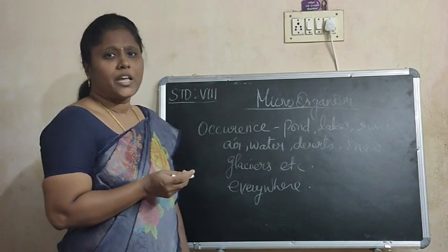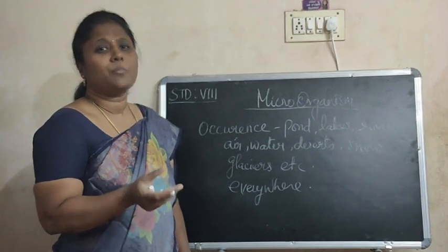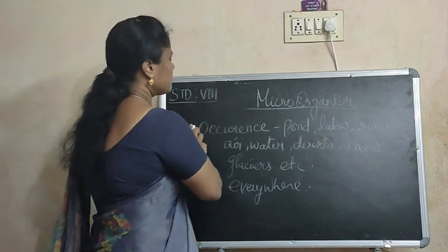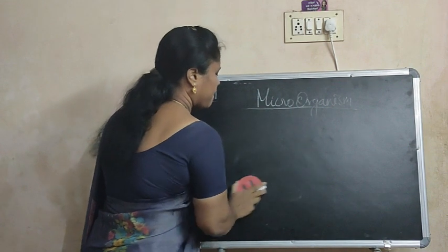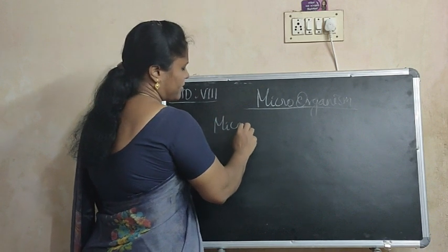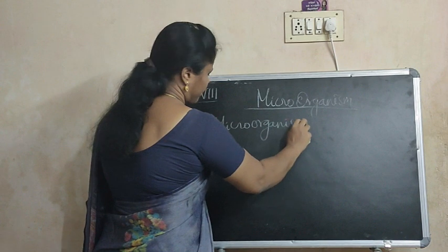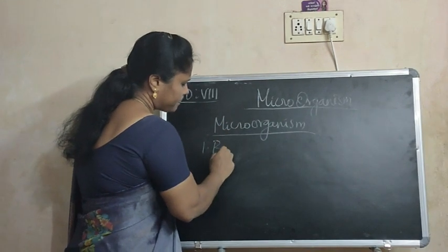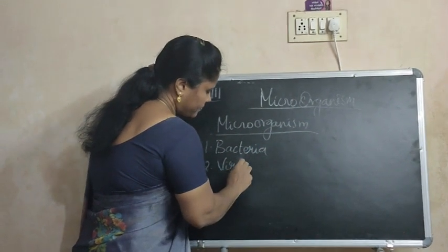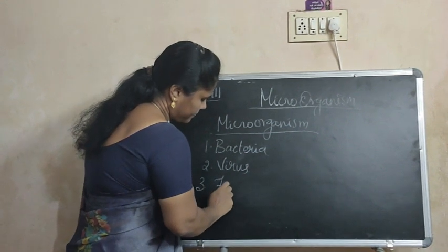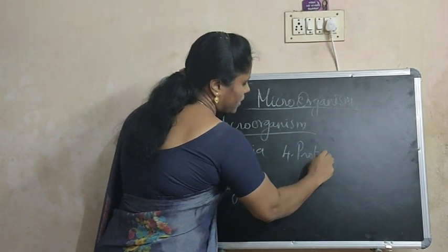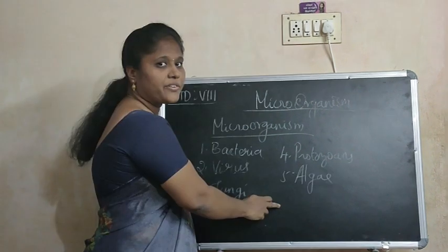Next, we are going to study about what are included as microorganisms. There are five categories: the first one is bacteria, the second is virus, the third is fungi, the fourth is protozoa, and the fifth is algae.